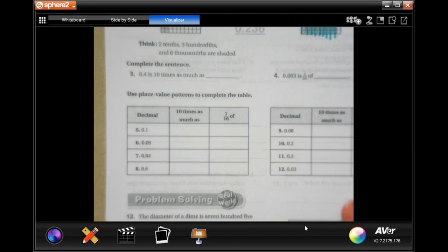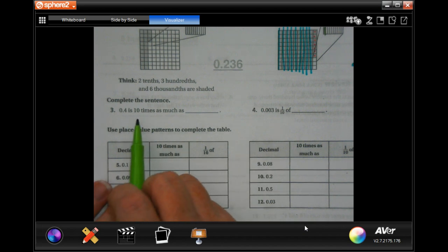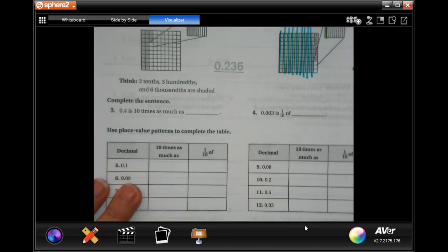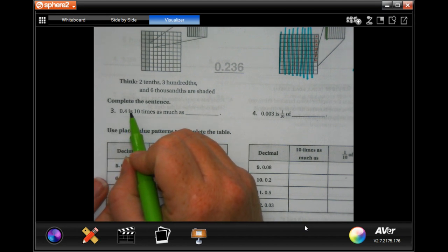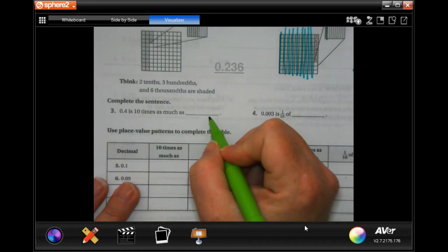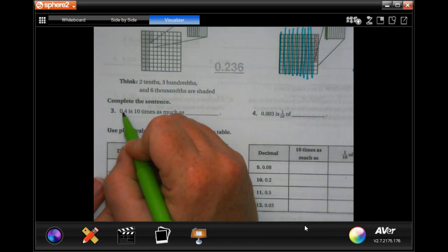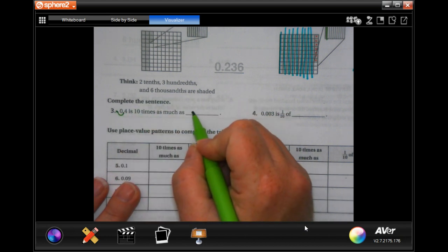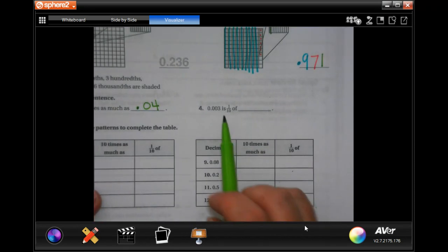All right guys, so on three it's saying that four is ten times as much as, which means it is bigger than the number that it is talking about. That point four is bigger than this number. Now it's ten times that much, which means that all we have to do is take that decimal and move it over here: so point zero four. Now this one is saying that this number is going to be bigger because we divided to get this number, so now it wants us to do the opposite.